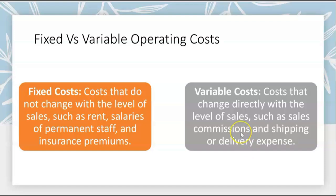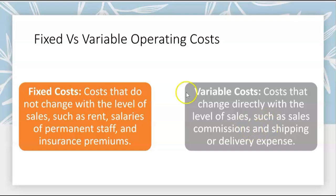If you don't have any sales, you won't have any sales commissions. But fixed costs — like salaries paid to permanent staff every month — still have to get paid even with no sales. Variable costs change directly with sales, such as sales commissions and shipping or delivery expense: if you have a sale you incur the delivery expense; no sale, no delivery expense.